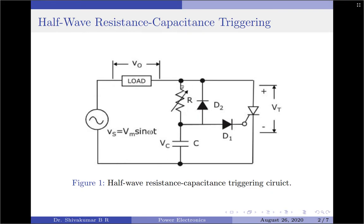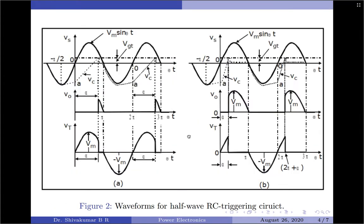In the negative half cycle of the input supply, the capacitor C charges through diode D2 with the lower plate positive to the peak supply voltage Vm. This capacitor voltage remains constant at minus Vm until the supply voltage attains 0 value. As the SCR anode voltage passes through 0 and becomes positive, the capacitor C begins to charge through R from the initial voltage of minus Vm. When the capacitor charges to a positive voltage equal to the gate trigger voltage Vgt, the SCR is triggered.